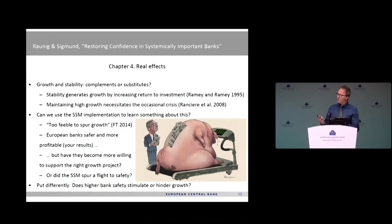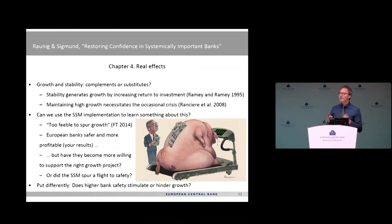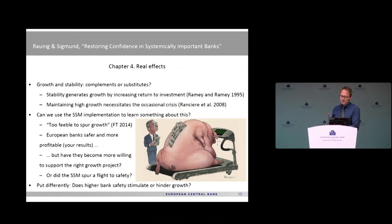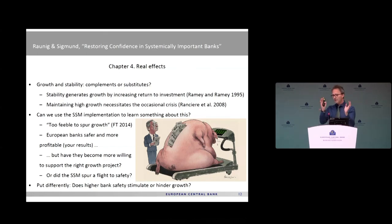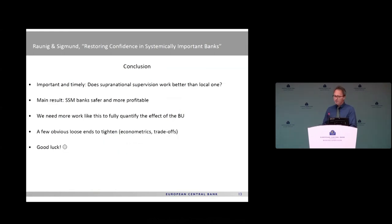I would like to know how SSM-induced bank safety has translated into the real economy. Is it because we eliminated dangerous management practices, or because we forced banks to always lend safe — which would be inconsistent with long-term productivity growth? I would like to think of stability and safety not in an isolated way, but as part of a bigger picture including long-term growth. In conclusion: important, timely paper. SSM banks are safer and more profitable — good to know, but put it in a larger context.